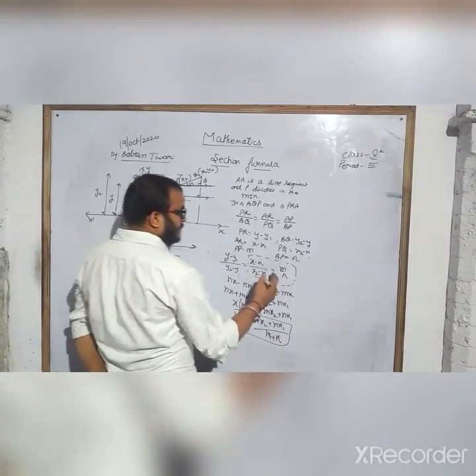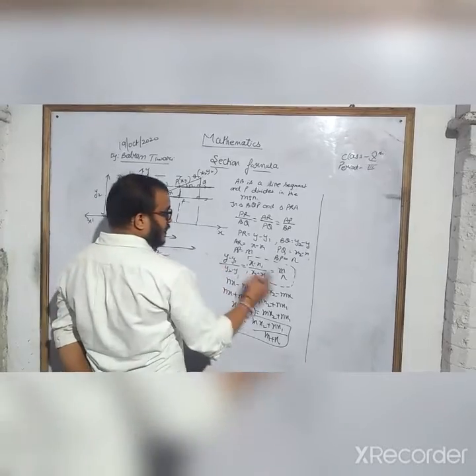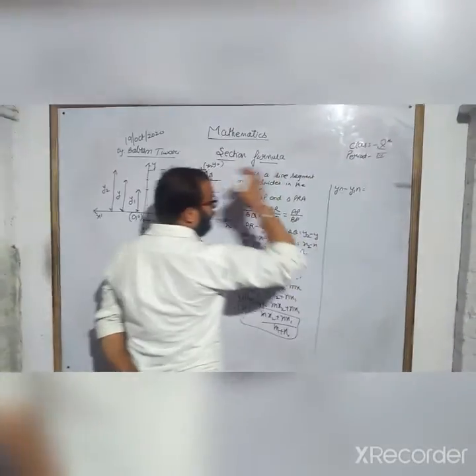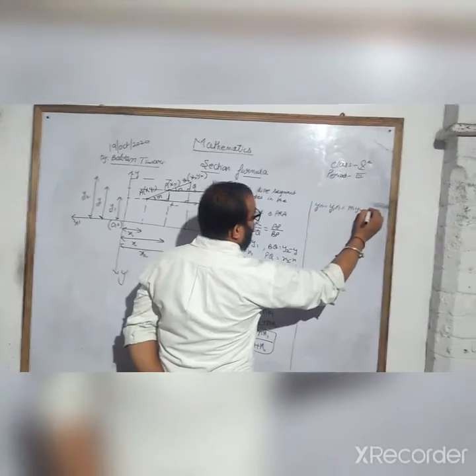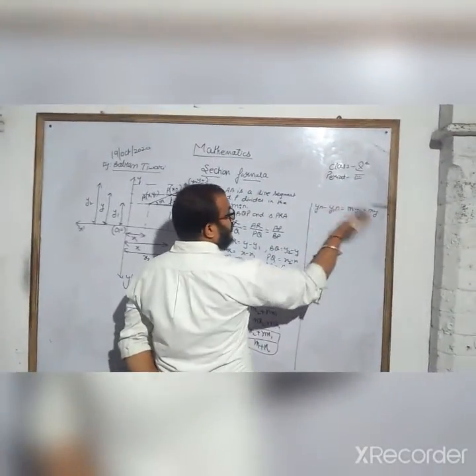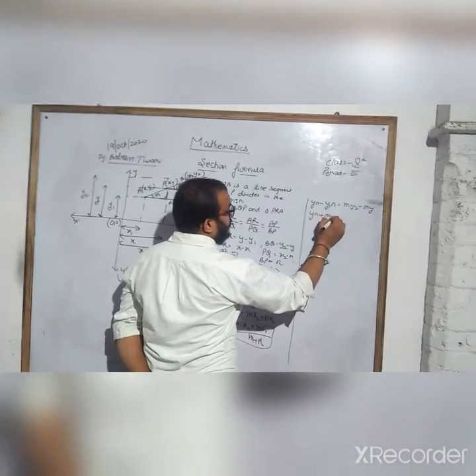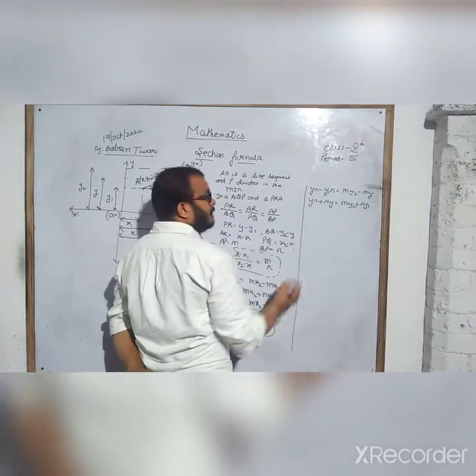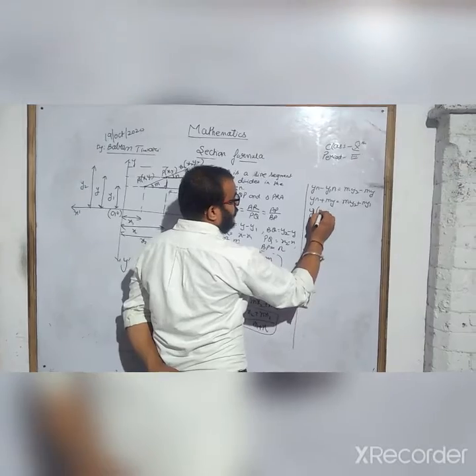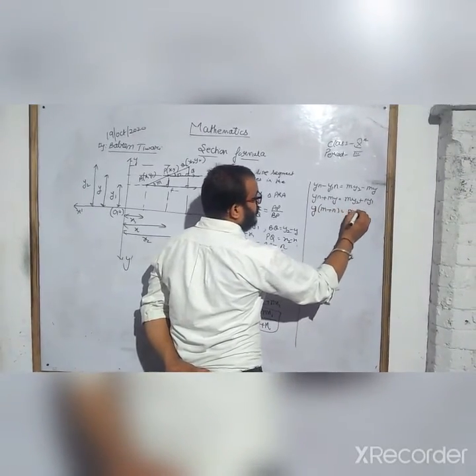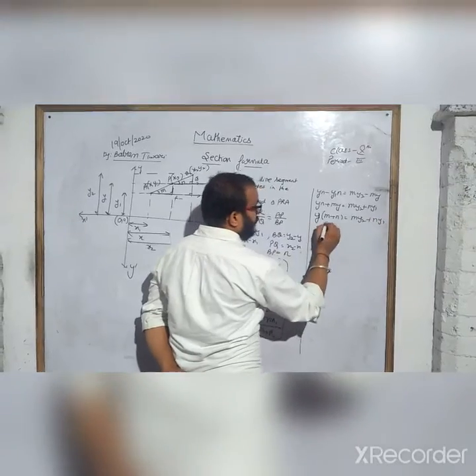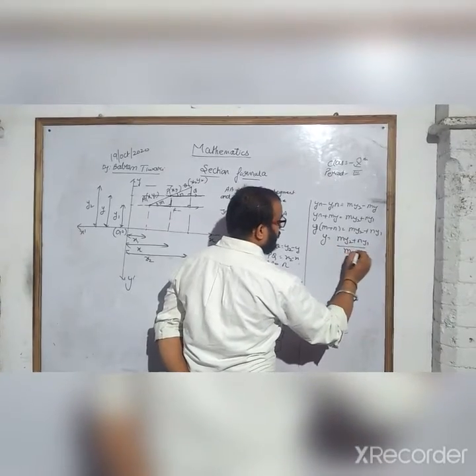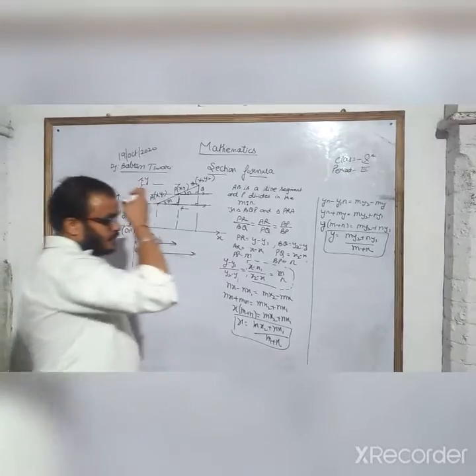Similarly, I have just solved these two values. Cross this. See you again? yn minus y1n equals to mx minus my. Cross this value here. ny plus my equals to my2 plus ny1. Taking common as y here. So what's the variable here? my2 plus ny1. So what does y become? my2 plus ny1 upon m plus n.